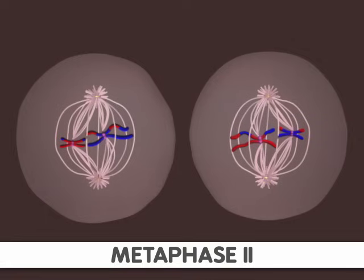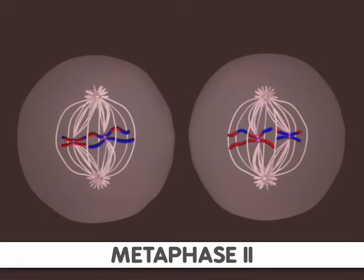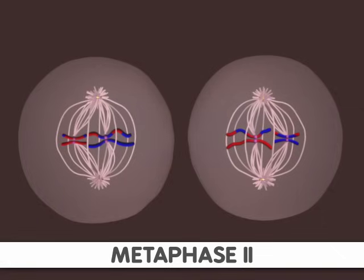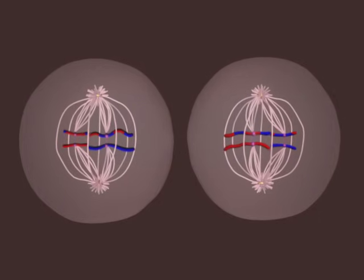In metaphase II, the chromosomes align at the equator of the cell. Again, the alignment is random. Since the sister chromatids are no longer identical, there will be many different possible ways for these chromosomes to align.